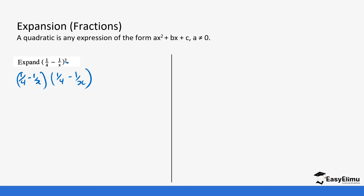So let's work this out together. You can use one expression to multiply the other one — we use the first one to open the second one. So it's going to be (1/4) into bracket (1/4 minus 1/x), and then minus (1/x) into bracket (1/4 minus 1/x).